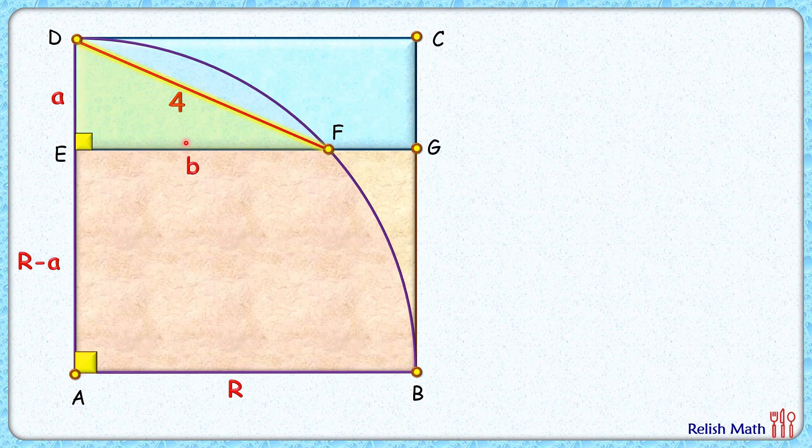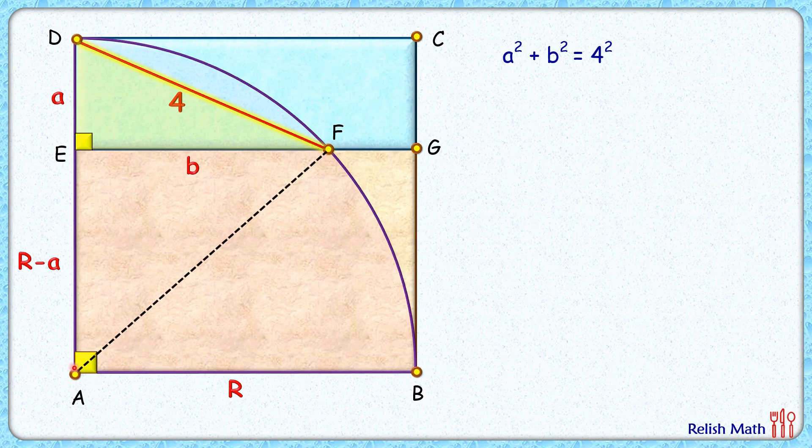Now in this right angle triangle, applying Pythagorean theorem, we'll get A squared plus B squared is 4 squared. Now let's join F to A here, and this is the radius of the quadrant, and thus it's R centimeters.